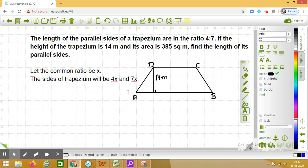Now it is given that area of the trapezium is 385. So we will be writing the formula for area of trapezium. Area of trapezium is equal to half into sum of the parallel sides into distance between them, that is the altitude.